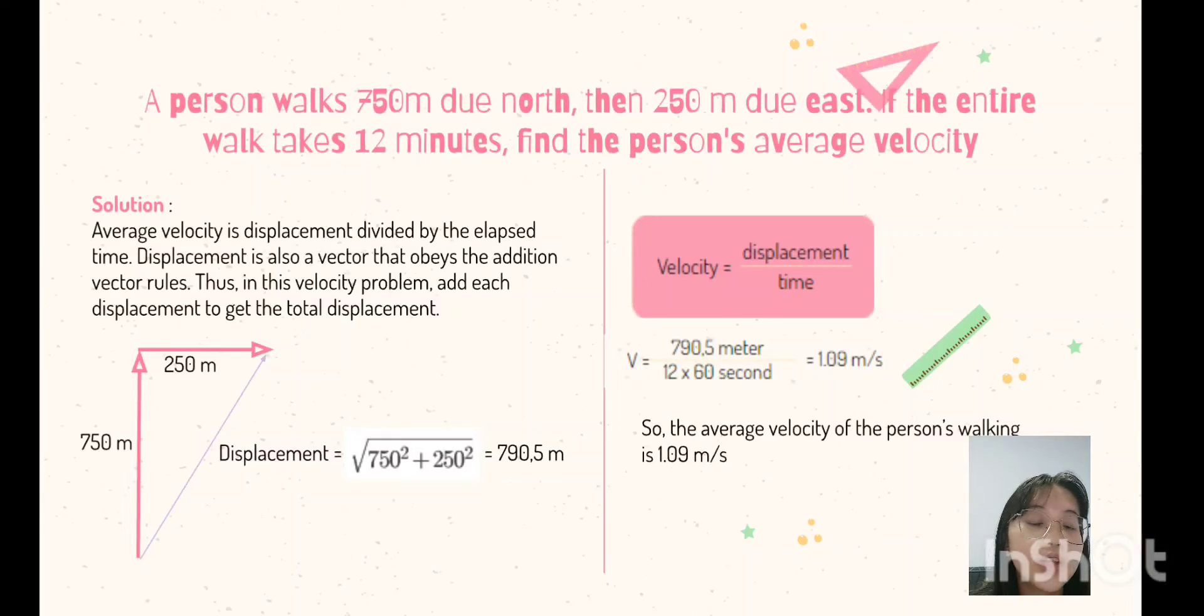In this question, I use a Pythagorean formula. So, the displacement is 790.5 meters. And in this question, I also use the velocity formula. So, the velocity equals 790.5 meters divided by 12 times 60 seconds. So, the average velocity of the person's walking is 1.09 meters per second.